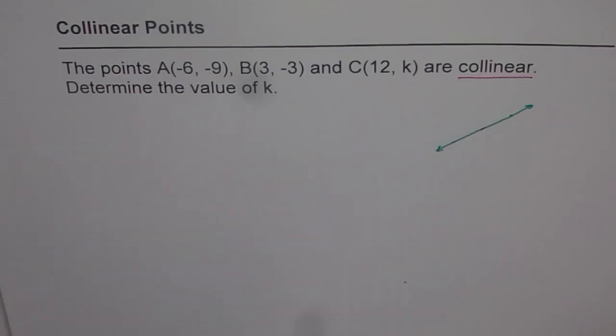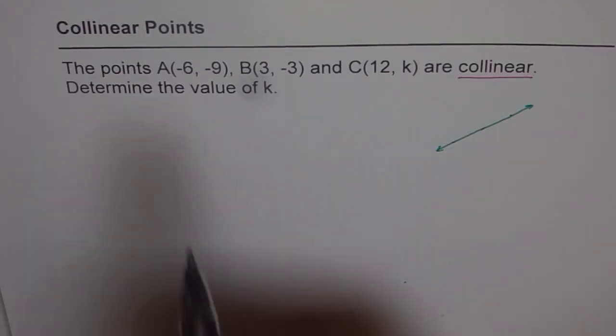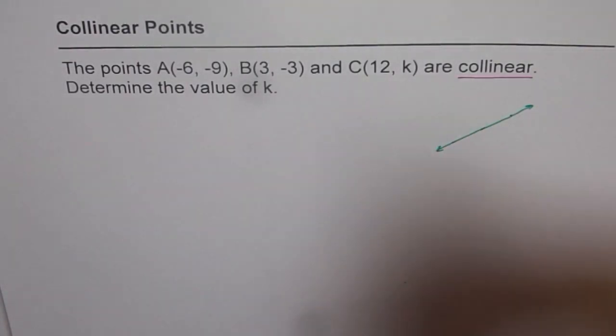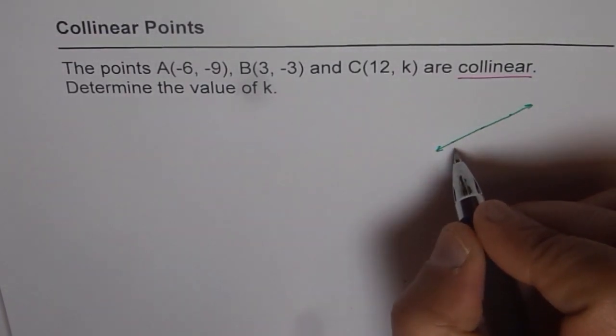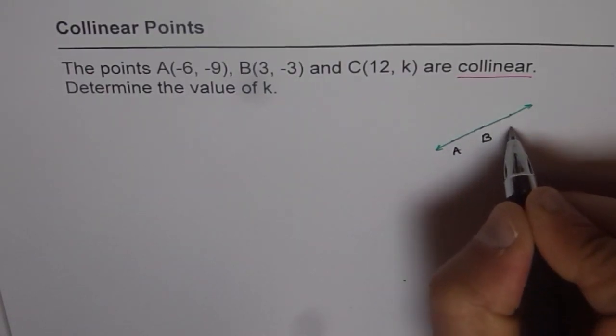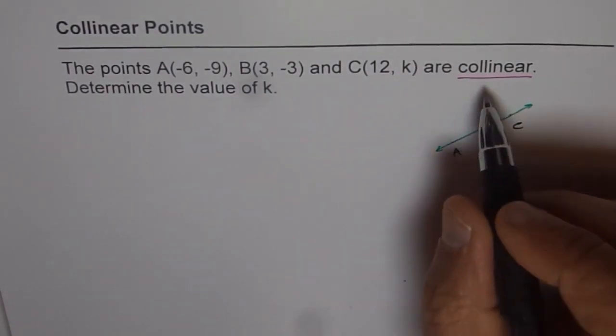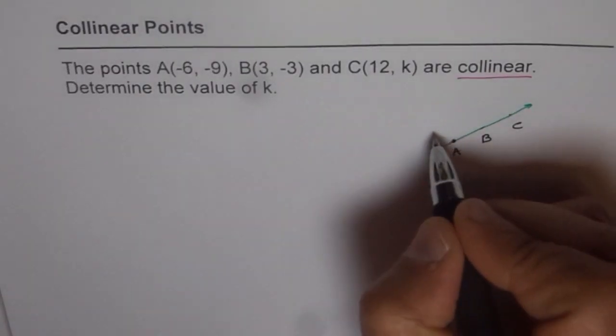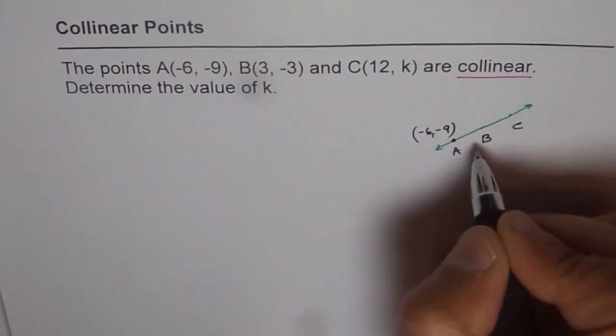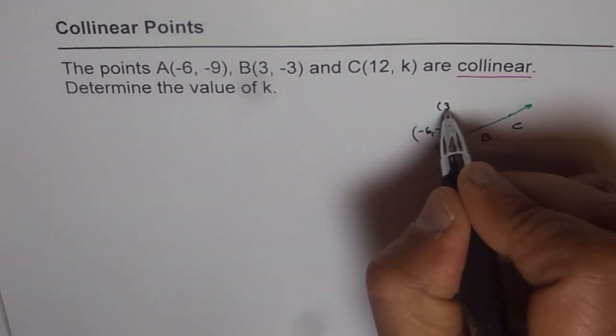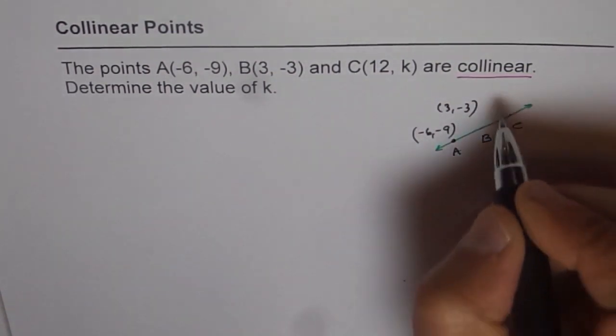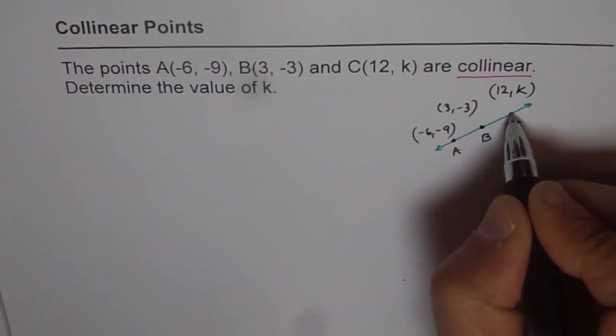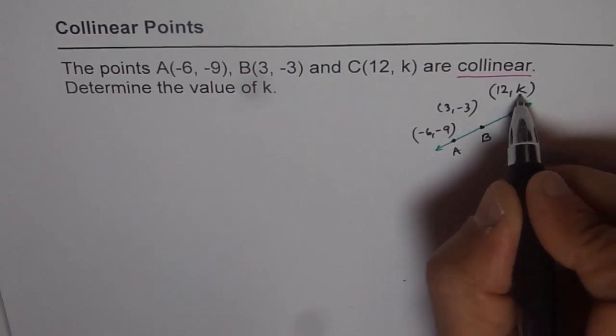Let's read the question to understand what we are trying to do. Points A, B and C are collinear. Let's write A, B and C here. Point A is given as (-6, -9), point B is (3, -3), and C is (12, K). If these three points are collinear, we need to find the value of K.